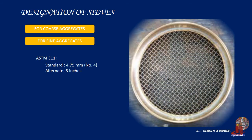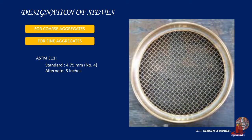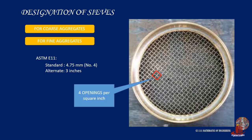In contrast, test sieves for fine aggregates have a different designation method. After taking a linear inch area, the number of openings are counted. Thus, a test sieve designated as number 4 would have 4 openings per square inch, and the number 200 sieve would contain 200 small openings in a square inch.